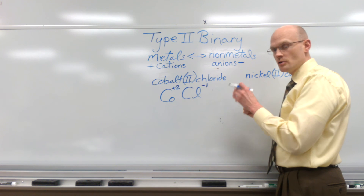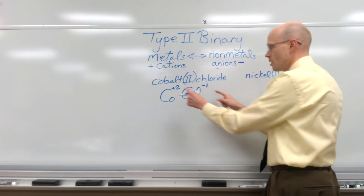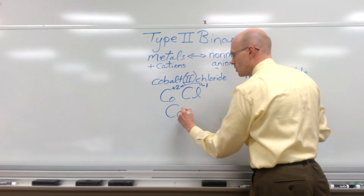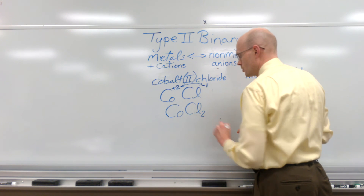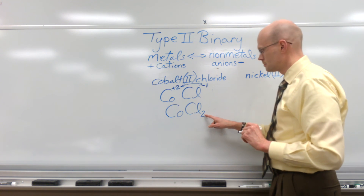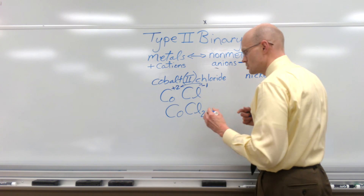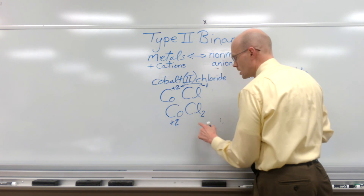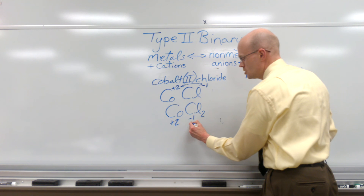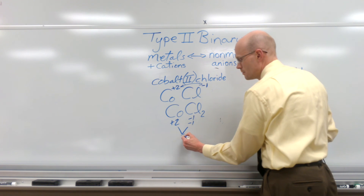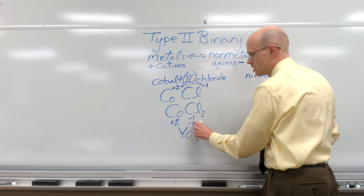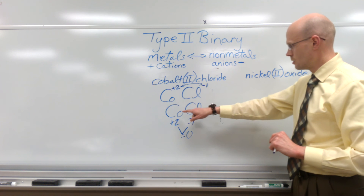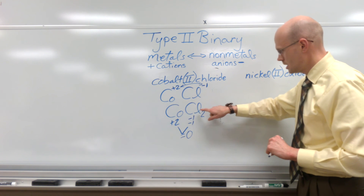To get the proper ratio for charge neutrality, we do the crossing over: the +2 from cobalt becomes a subscript of 2 for chloride, and the 1 from chloride becomes the subscript for cobalt. We get CoCl₂. To check: cobalt carries +2, and we have two chloride ions each with −1; +2 minus 1 minus 1 equals zero — that's charge neutral. So cobalt(II) chloride is CoCl₂.